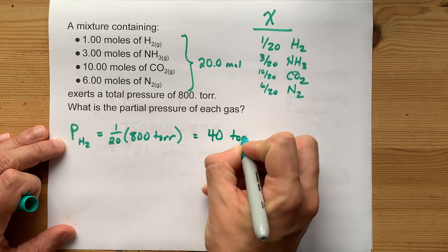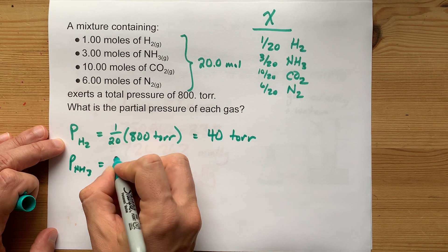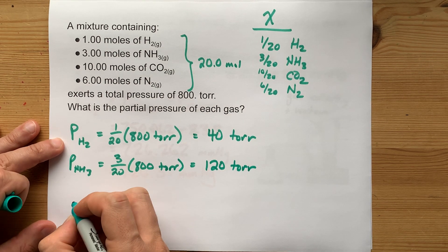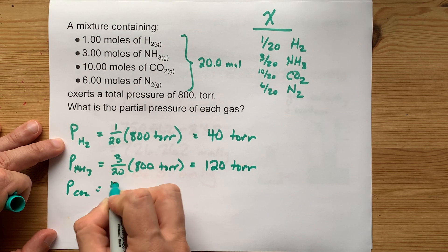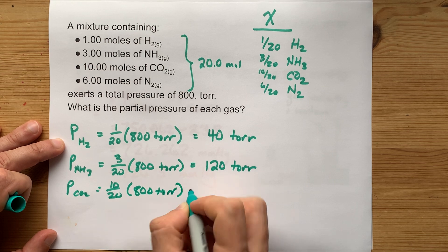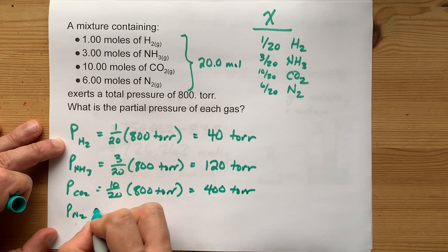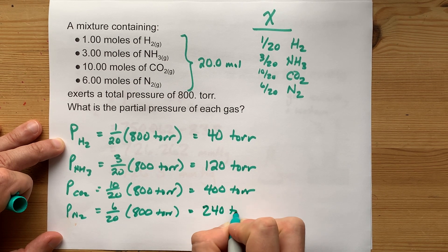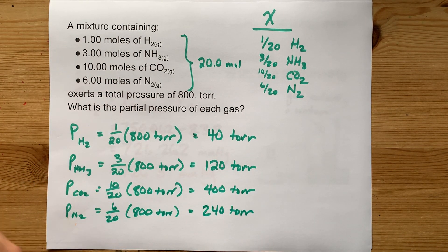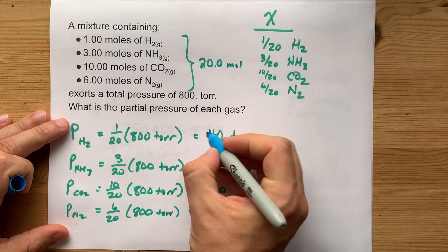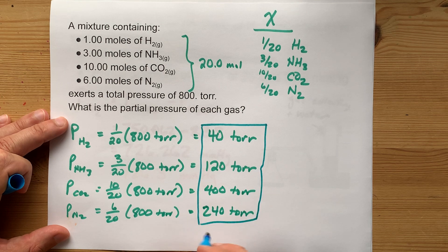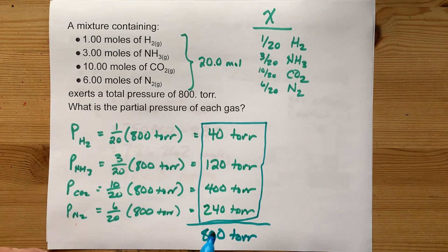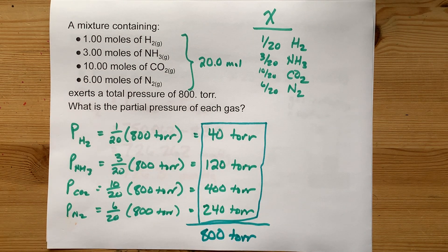If the total pressure is 800 Torr, hydrogen contributes 1/20 of 800 = 40 Torr. Ammonia contributes 3/20 of 800 = 120 Torr. Carbon dioxide is 1/2 of 800 = 400 Torr. Nitrogen contributes 6/20 of 800 = 240 Torr. When you add all the partial pressures together, you should get the total pressure — which is exactly what Dalton's Law of Partial Pressures states.